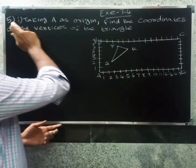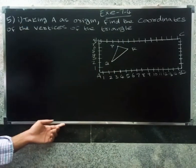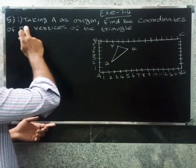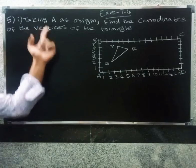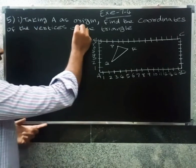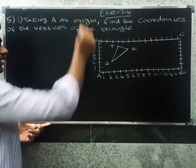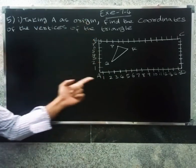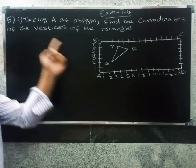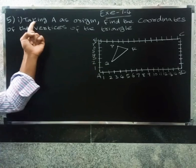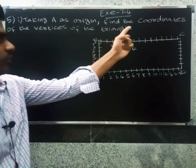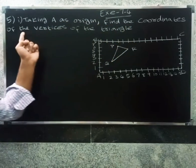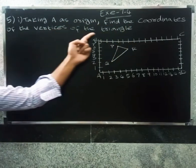This is problem 1.4, question 5. The question is about a school's rectangular piece of land. Taking A as the origin, find the coordinates of the vertices of the triangle.